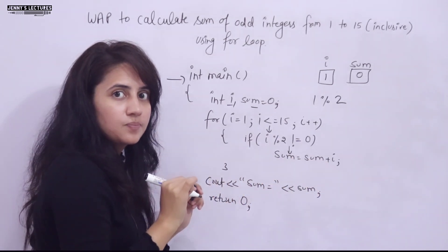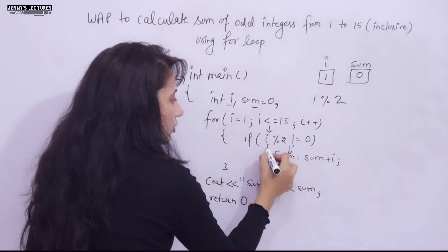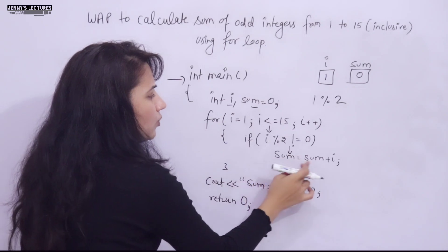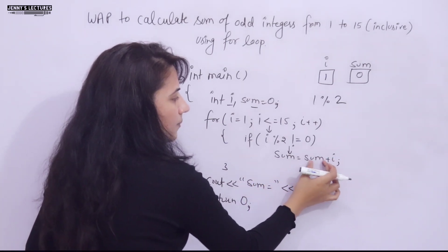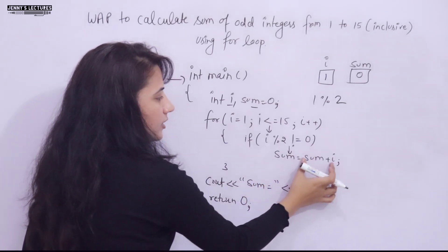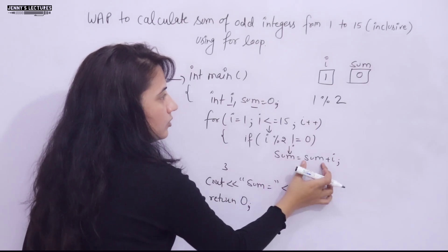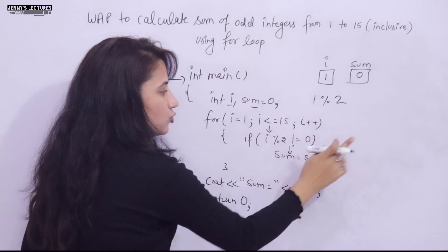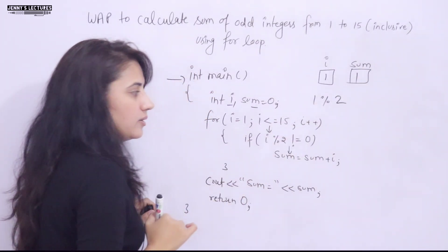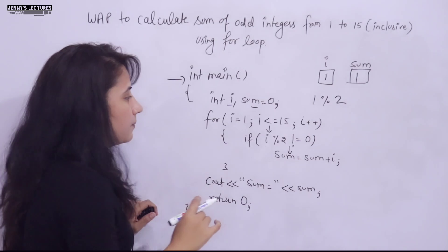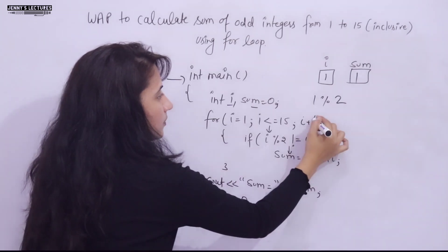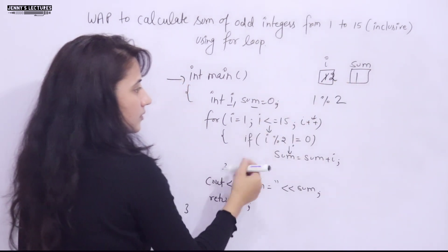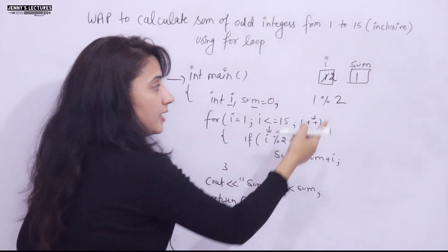Control enters the if statement. We only have one statement so curly braces are optional. sum = sum + i: sum is 0 and i is 1, so 0 + 1 = 1. Sum now becomes 1.